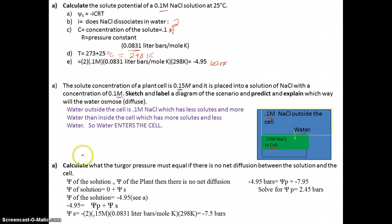The third part of the problem: calculate what the turgor pressure must equal if there is no net diffusion between the solution and the cell. The water potential of the solution would equal the water potential of the plant. The water potential of the solution equals zero—there's no pressure—plus the water potential of the solute, which is due to the 0.1 molar sodium chloride. That's what we figured out in the first problem, and we got negative 4.95. You do exactly what we did there.